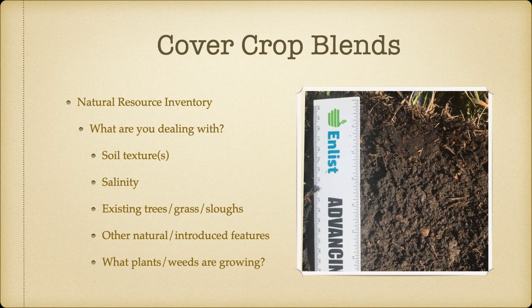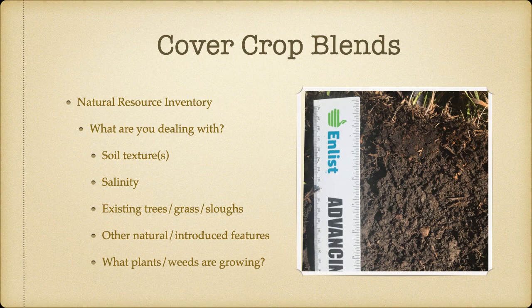The next thing we need to really look at is our natural resource inventory — what exactly are we dealing with? We want to know our soil texture or soil textures. Are we dealing with sand, clay? Is there any salinity we have to be concerned with? Do we have existing trees, natural grass, sloughs, or other natural or introduced features like fence lines, railroad tracks, or natural waterways? We also want to take inventory of what plants are growing there — are they plants we want, or weeds we don't want?